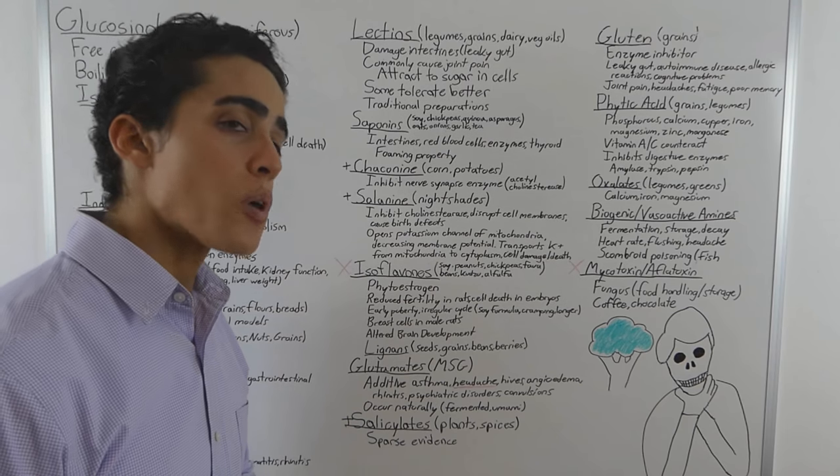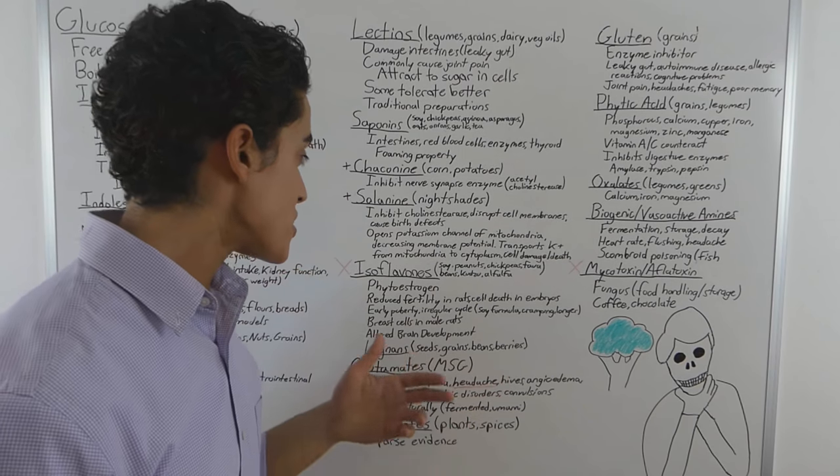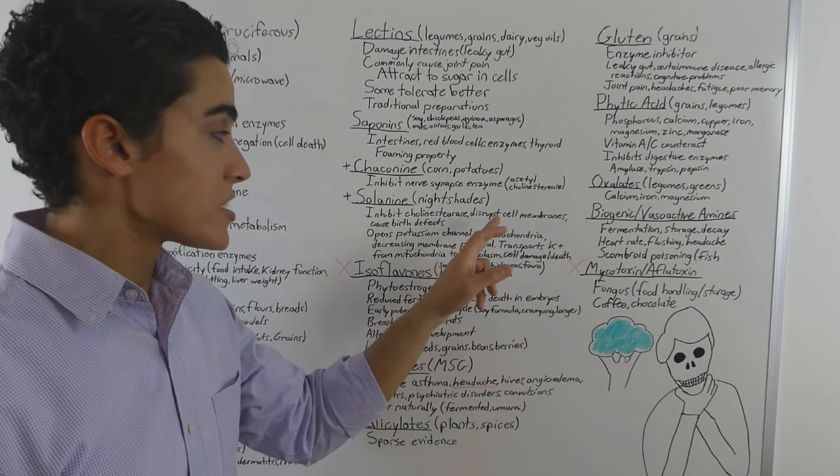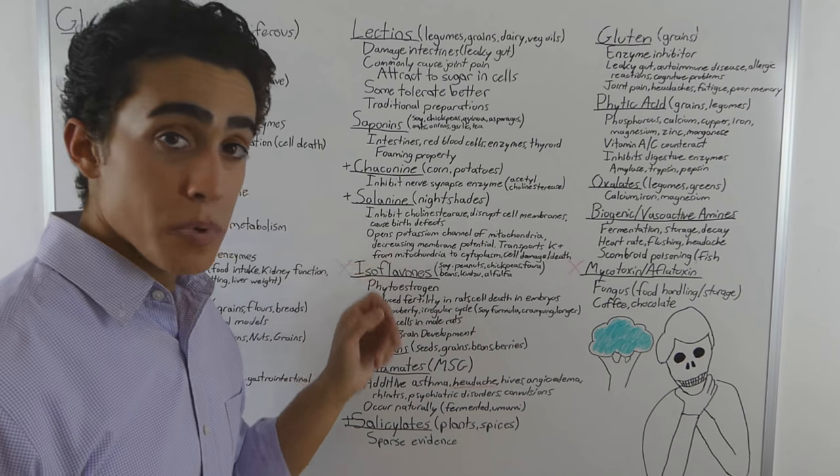Solanine is the primary antinutrient found in nightshades. It inhibits the same nerve synapse enzyme that chaconine does. It disrupts cell membranes and can cause birth defects.